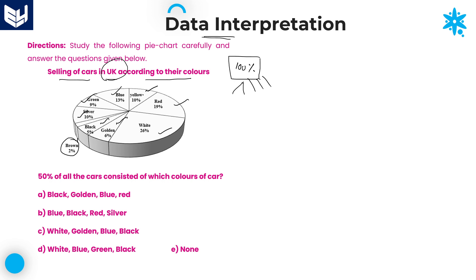In total, we have 9 different colors. 9 different colors of cars are sold in UK — that is the given information. Everything is given in terms of percentage.